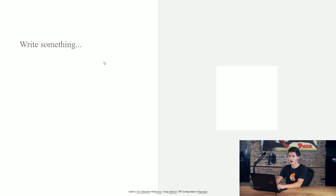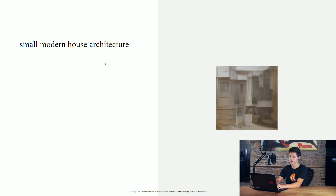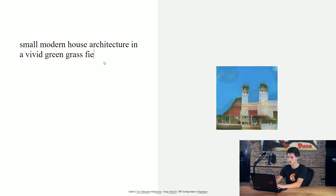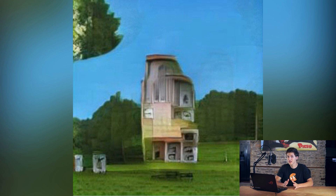For example, say I wanted to create a house but wasn't sure how to compose it or what I wanted it to look like. Let's type: 'small modern house architecture in a vivid green grass field.' Just like that, we now have a really cool, extremely stylized house that was just generated for us. And we can recreate this in something like Blender or any other sort of artistic medium.